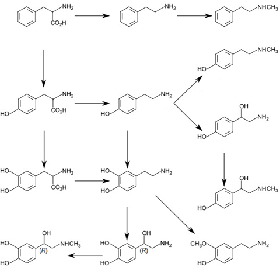PNMT's normal function and defects are associated with multiple diseases and disorders. Decreased levels of PNMT activity, measured by epinephrine and norepinephrine, are seen in the skin of patients with vitiligo in the keratinocytes, which normally have higher PNMT activity.